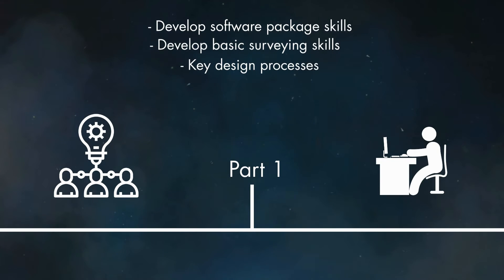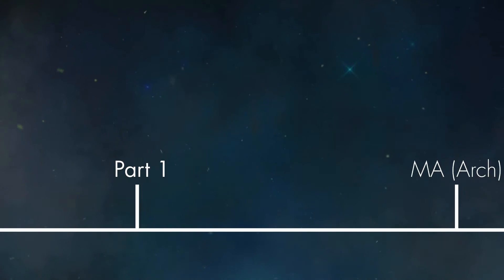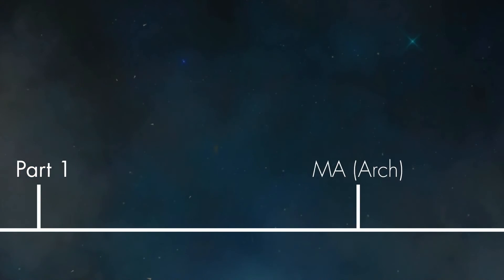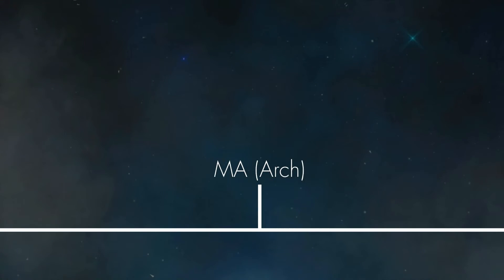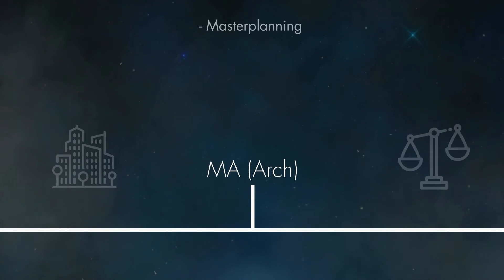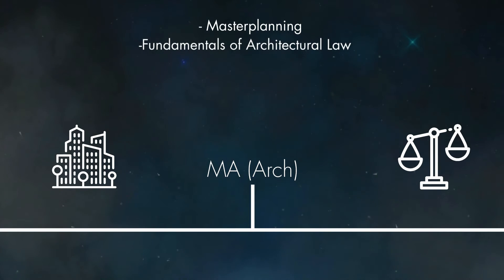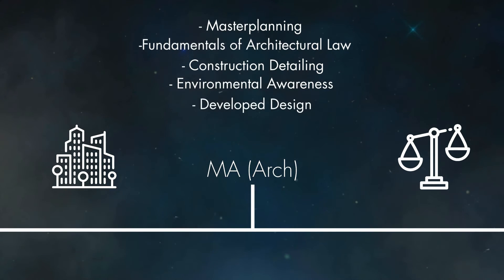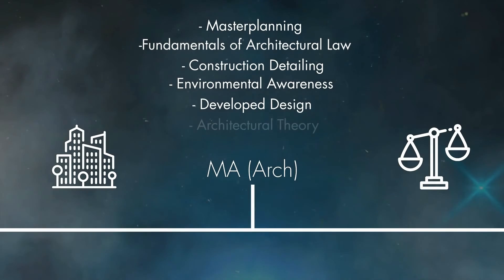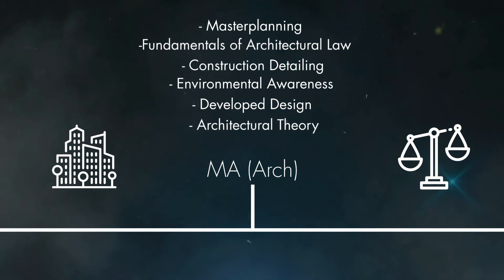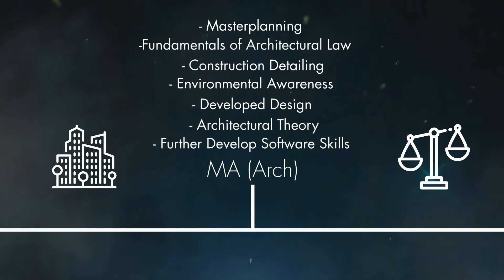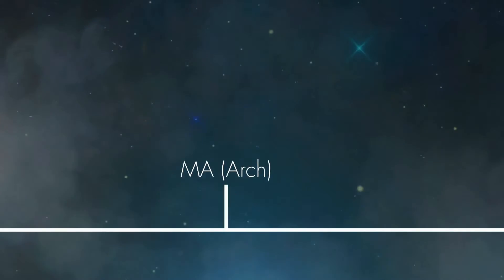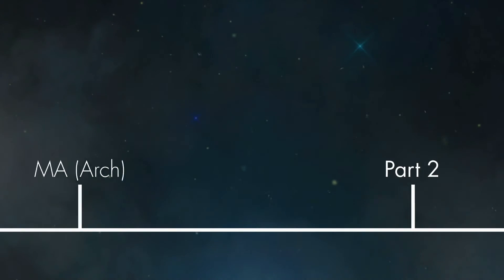After hopefully having a successful Part 1 experience, this is when you can apply to go back to university to do your master's in architecture. This is where you'll really start to refine and develop your architectural design skills as well as your architectural theory, and really build up a more fundamental understanding of architectural law, construction, and contract management.